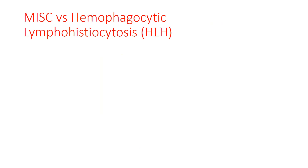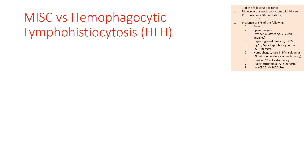Haemophagocytic lymphohistiocytosis is a term not clearly understood by many, and we can confuse MIS-C with HLH. HLH is defined by one of two criteria: either a molecular diagnosis consistent with HLH — for example, perforin mutations or SAP mutations — or the presence of 5 of 8 of the following criteria, which is the usual clinical diagnostic approach.